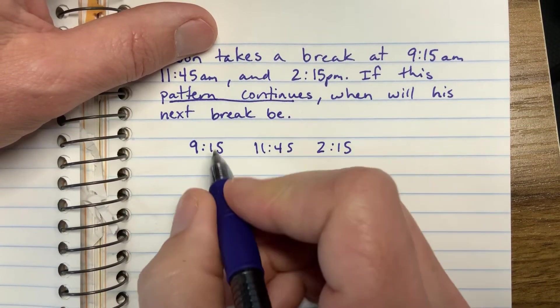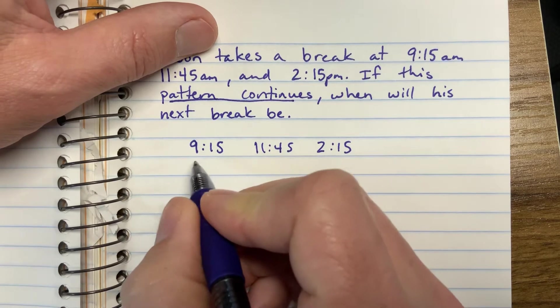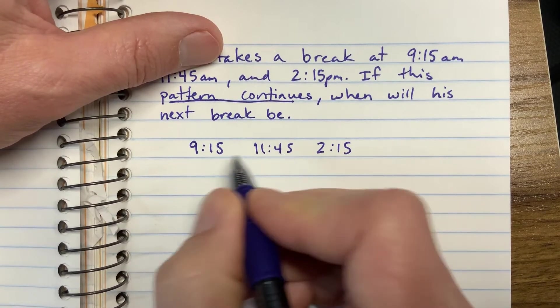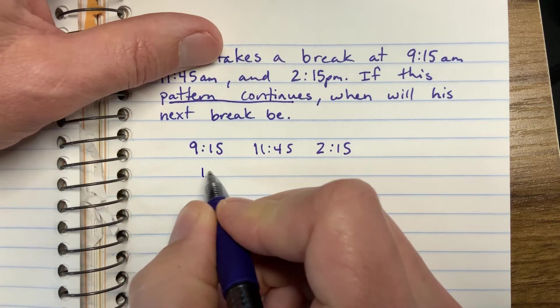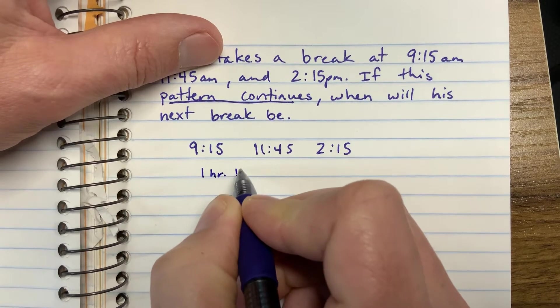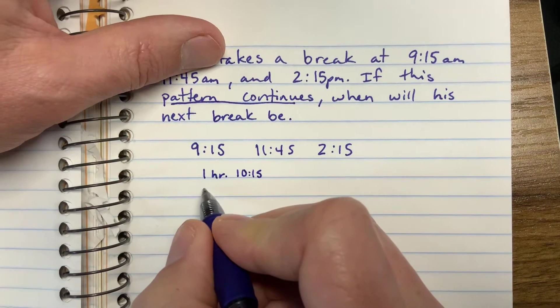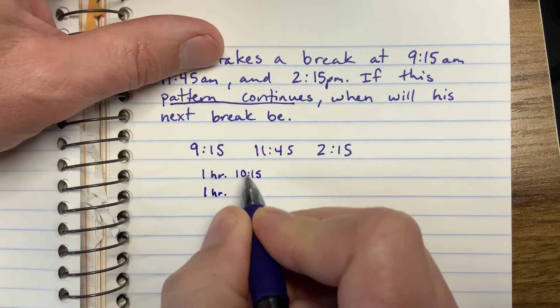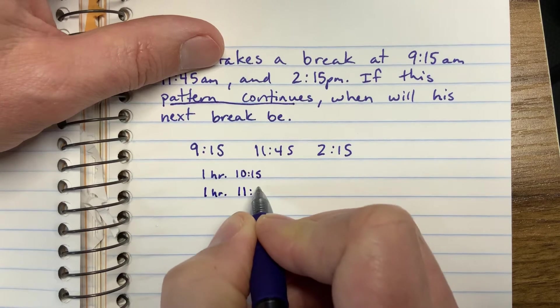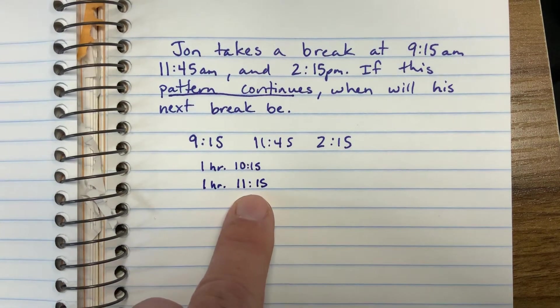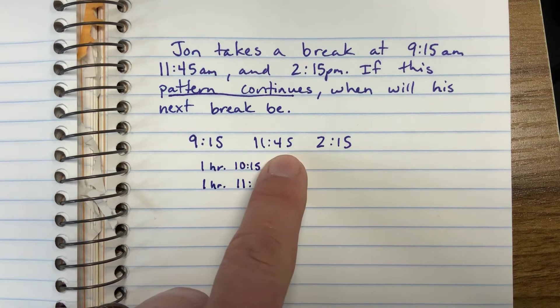What I like to do is count up, and I count up by hours. So if I want to see the difference in time between 9:15 and 11:45, I'm going to add an hour. One hour here would bring us to 10:15, which is not at 11:45 yet. So another hour is going to bring us to 11:15, which gets us close here.